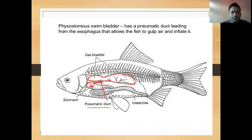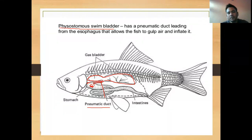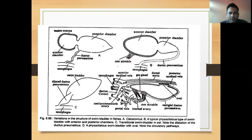There are two types of swim bladder. The first type is called physostomous. The second type is also discussed in relation to the swim bladder classification.